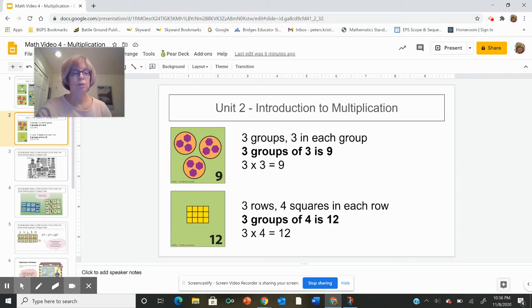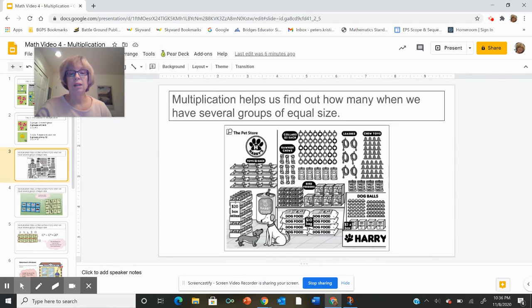So as we started unit two, we started looking at different contexts. And the first one we looked at was a picture of a pet store, because, of course, everything needs to be orderly and in nice, neat rows.